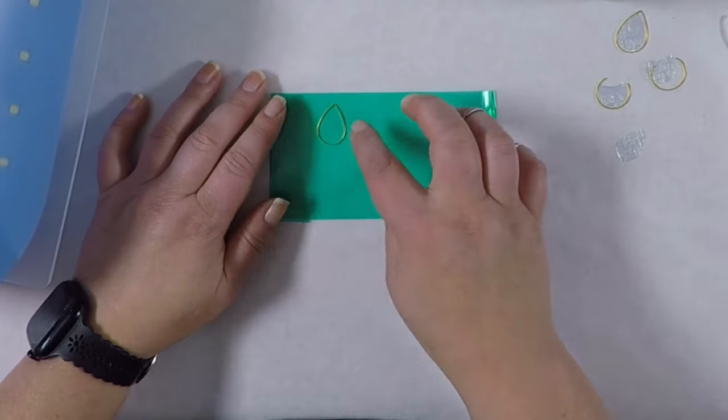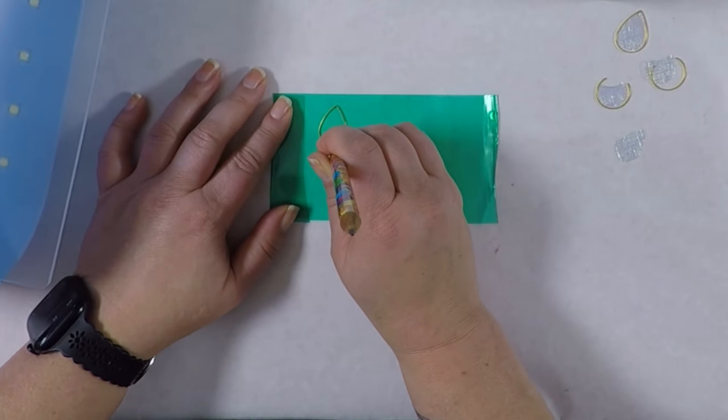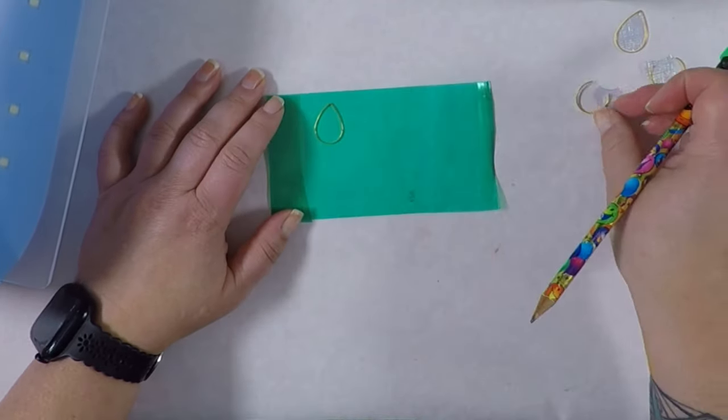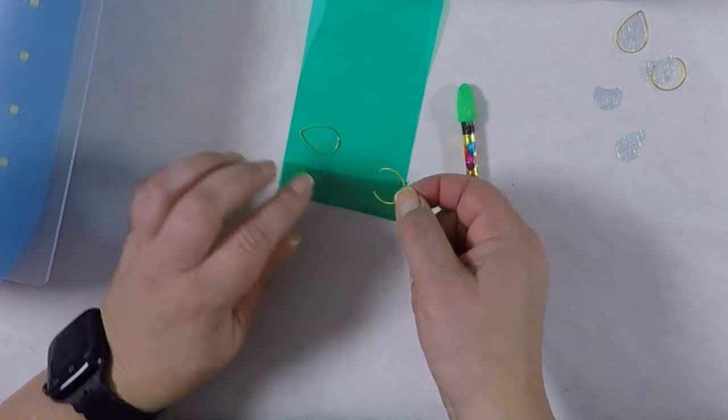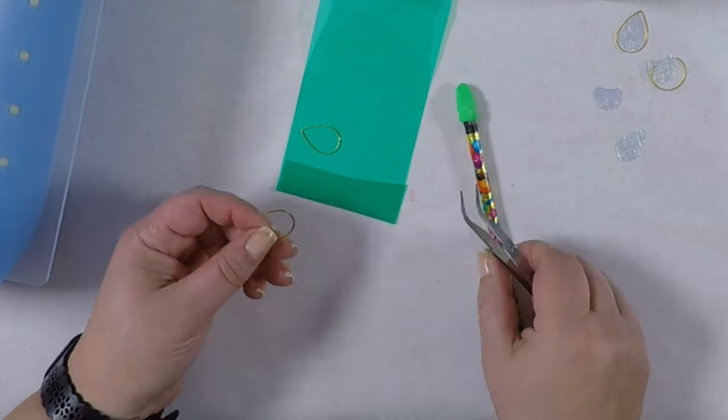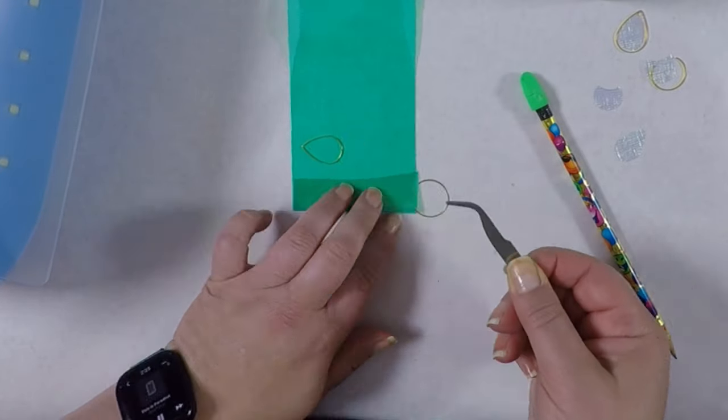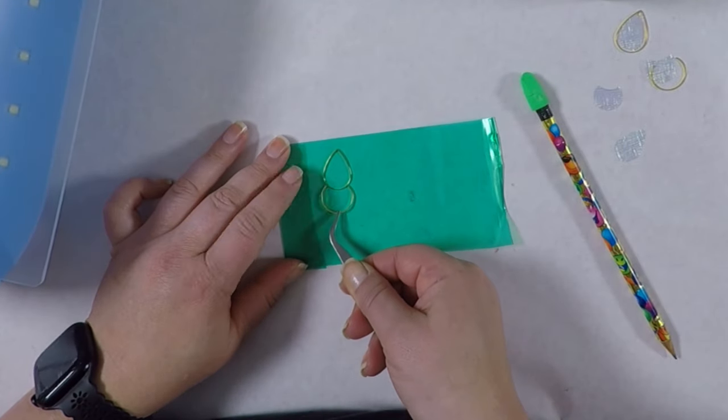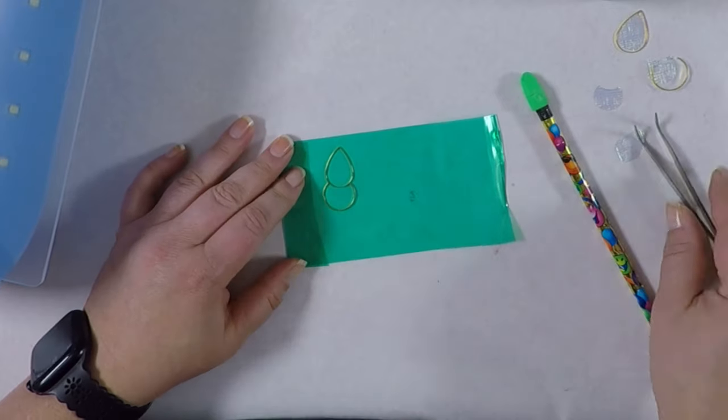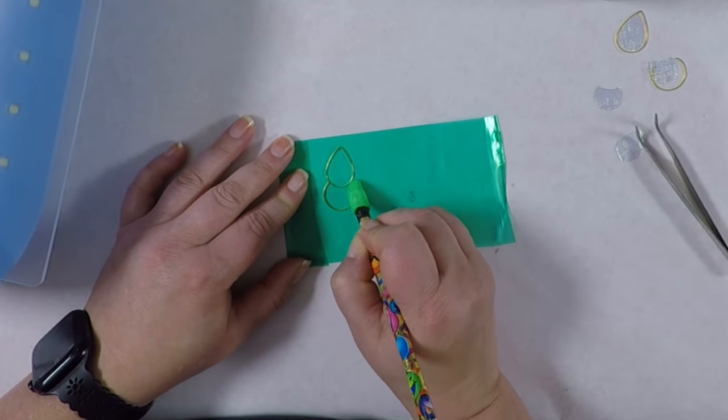Once I've got those cut out I put them on the tape making sure to avoid any lines created when pulling the tape out. I just used the eraser of the pencil to make sure they were stuck well to the tape. I also used tweezers to help me center the round part onto the teardrop.